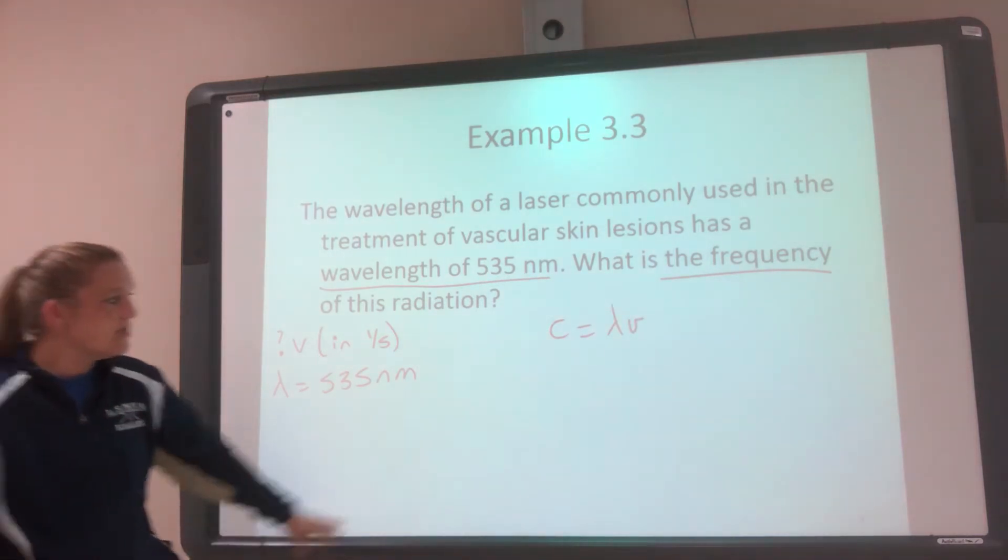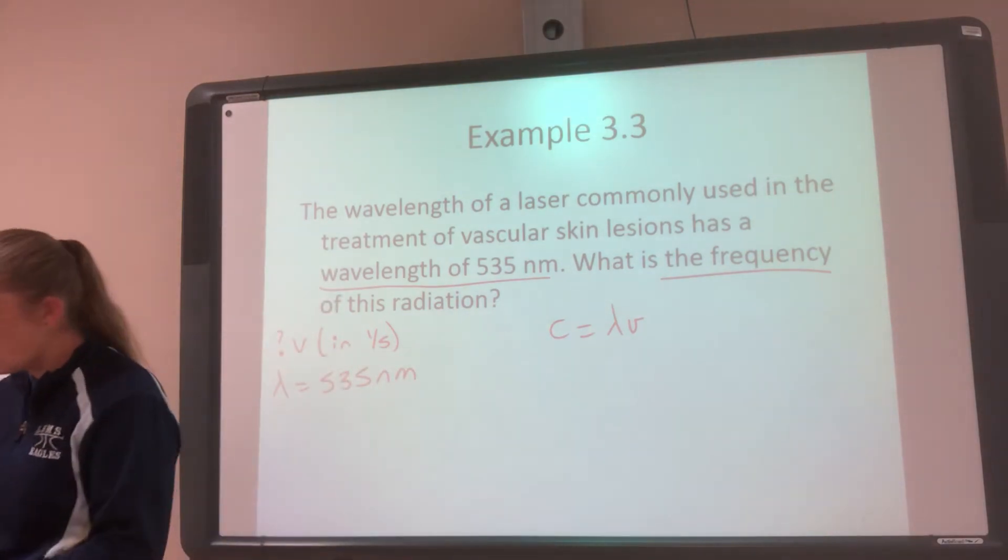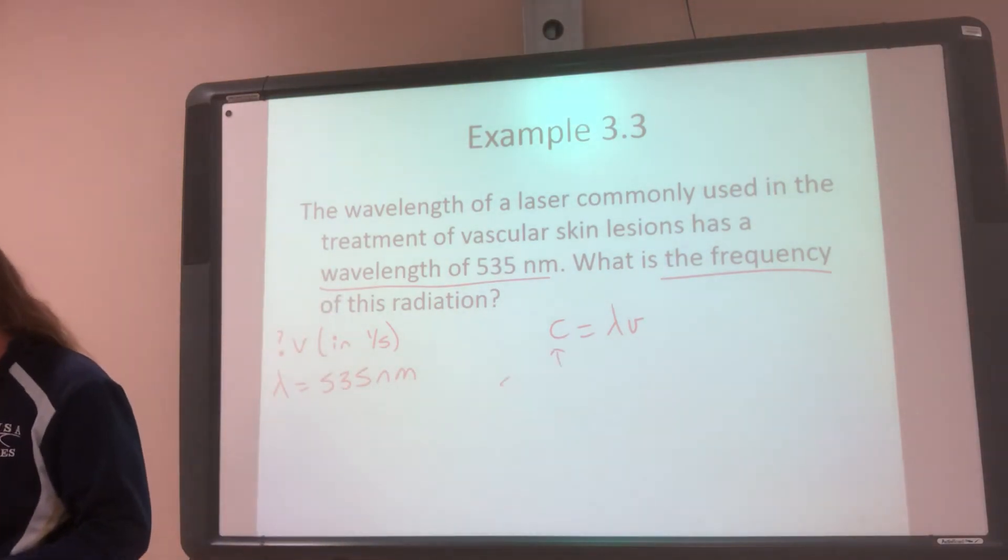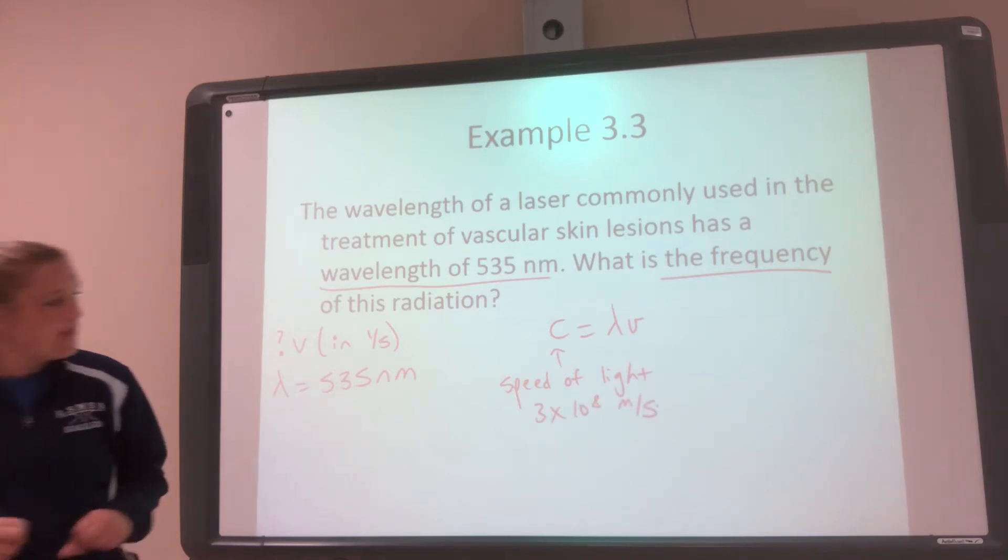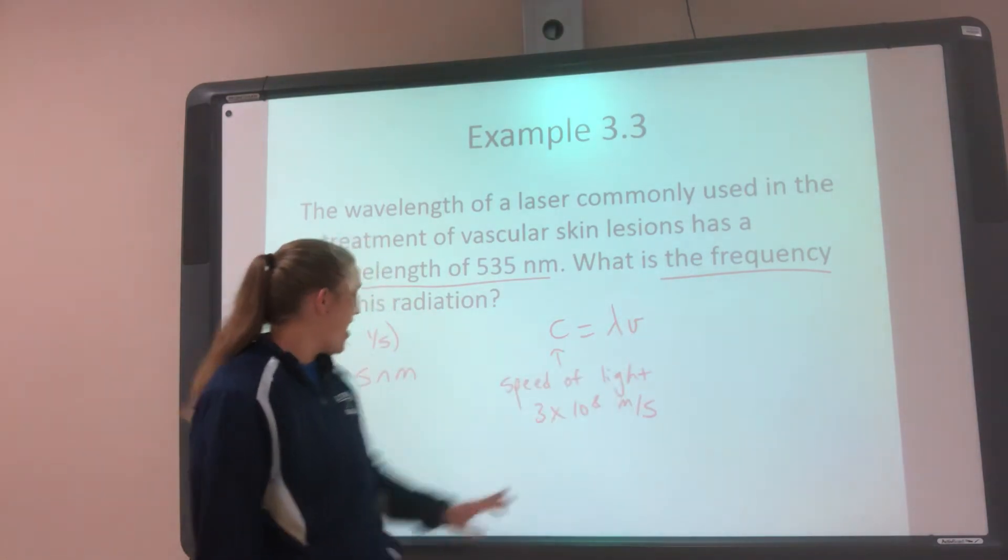So C we know, that's a constant, the speed of light. So we already got that, that was my 3 times 10 to the 8th meters per second. And then I'm looking for frequency, and there's wavelength. I have wavelength.